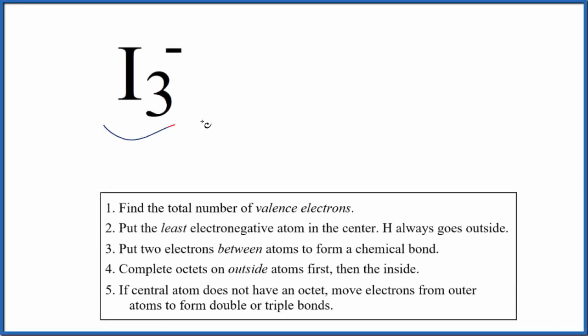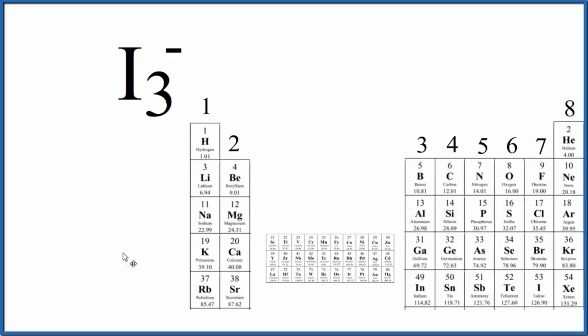Let's draw the Lewis structure for I3-. This is the tri-iodide ion. So the first thing we do with Lewis structures is we count the number of valence electrons. The periodic table can help us do that.